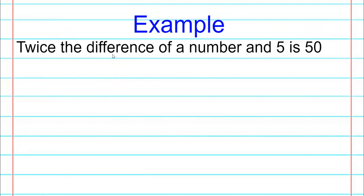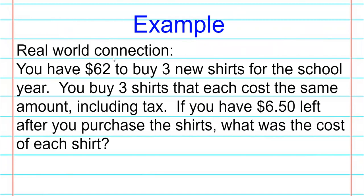Real world connection: You have $62 to buy three new shirts for the school year. You buy three shirts that each cost the same amount, including tax. If you have $6.50 left after you purchase the shirts, what was the cost of each shirt? So we know that we bought three shirts. We know that we have six dollars and 50 cents left and we started with a total of 62 dollars. So three times the number of shirts, three times the shirts, plus the extra 6.50 that we have left would equal the total of 62 dollars.